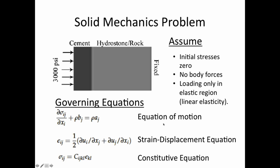If I was applying 10,000 psi, this wouldn't be a good assumption because I'd be outside the elastic region and might need to use a Mohr-Coulomb or specific cement constitutive relationship. For the governing equations, I have the equation of motion where rho*b_j is the body force, sigma is stress, and rho*a_j is the second derivative of displacement with respect to time. The rho is the bulk density. This is the equation I'm actually solving in the finite element analysis.